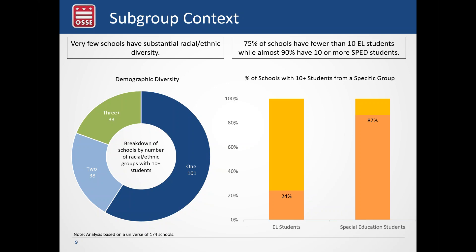Looking at other category breakdowns: three-quarters of our schools have fewer than ten English learner students, while almost 90% have ten or more special education students. So far more schools would have a sufficient n-size for special education than for EL. Note that this is EL students based on taking PARCC, not the ACCESS assessment. Also, n of ten is solely for discussion purposes — OSSE has not yet determined our ultimate n-size. We are considering going lower than the current 25 but feel additional modeling is needed, and any n-size set must work consistently throughout the entire system.